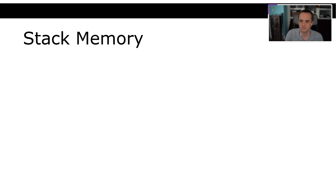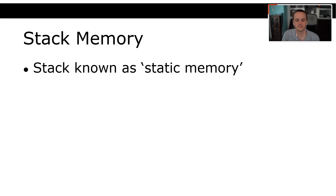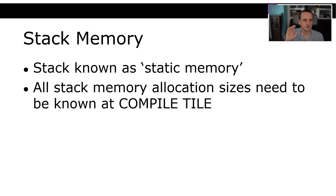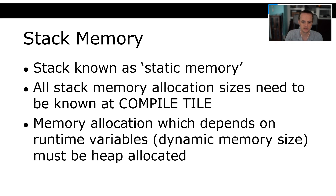Stack memory is also called static memory because all static memory allocation sizes need to be known at compile time. Because the stack operates in a specific way with the program code also living there, your program must know how much memory to allocate on the stack at compile time. Memory allocations that depend on runtime variables — dynamic memory sizes — must be heap-allocated.